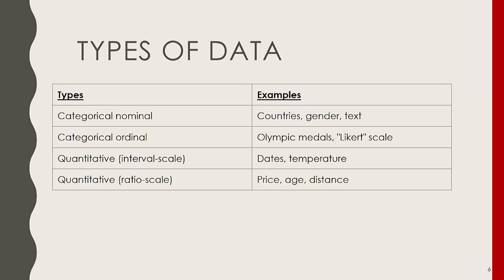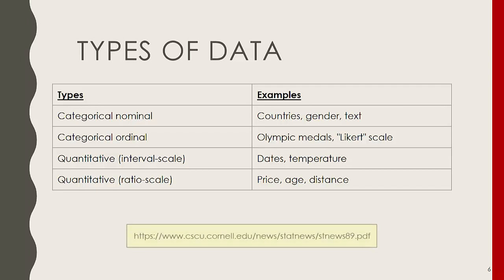There are a few ways you can figure out how your data should be visualized. One of these ways is by identifying the type of data you have — categorical, interval, or ordinal — and then finding the right visualization based on that. You can check out Cornell Stat News publication number 89 for more information. The link is at the end of this video.